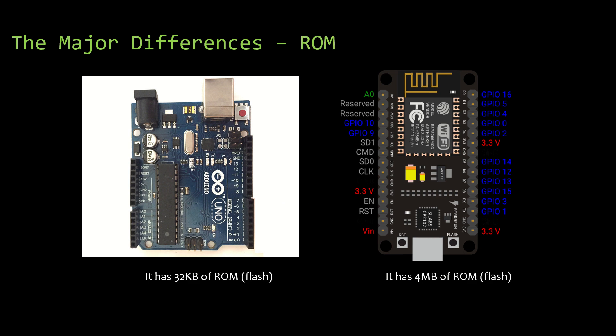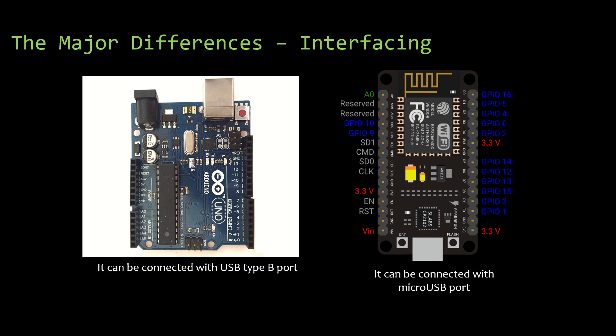Coming to the ROM: Arduino UNO has got 32 KB of ROM which is flash memory, whereas NodeMCU has 4 MB of ROM, also flash memory. NodeMCU is better in this aspect with 4 MB compared to Arduino UNO's 32 KB.